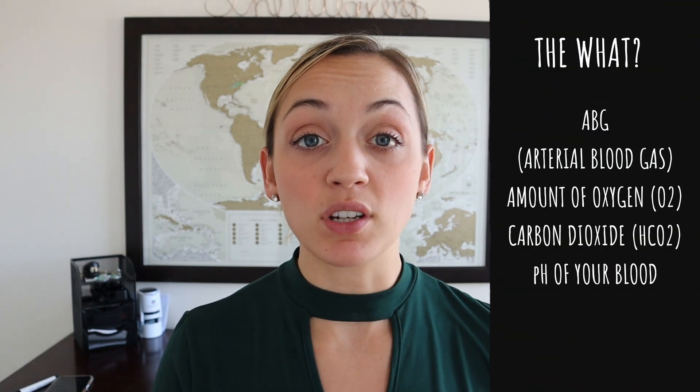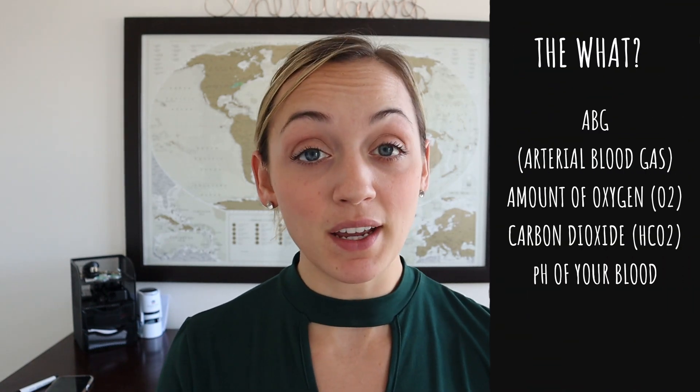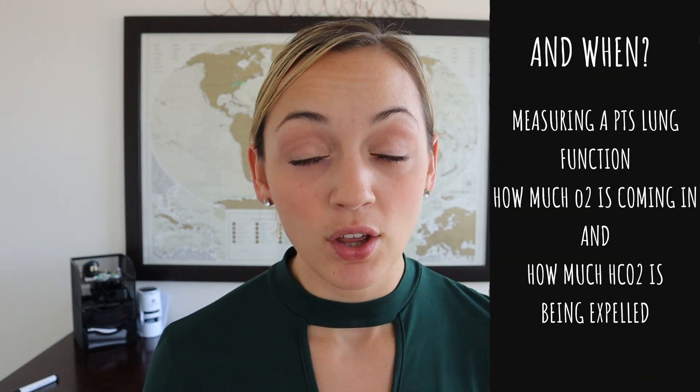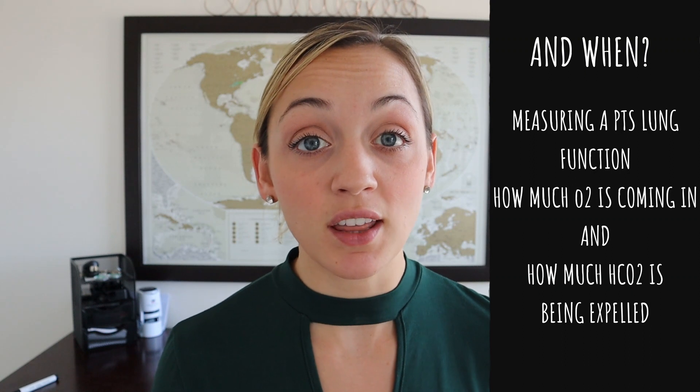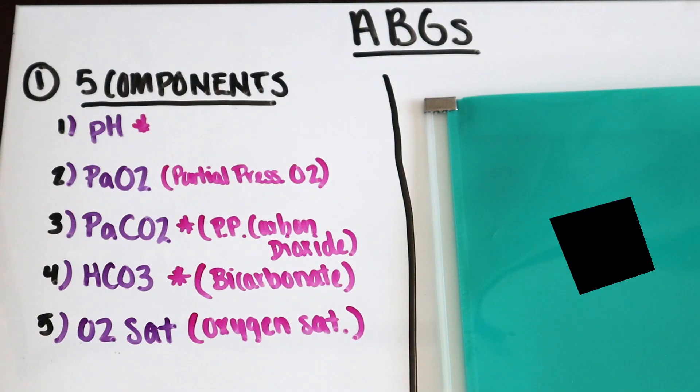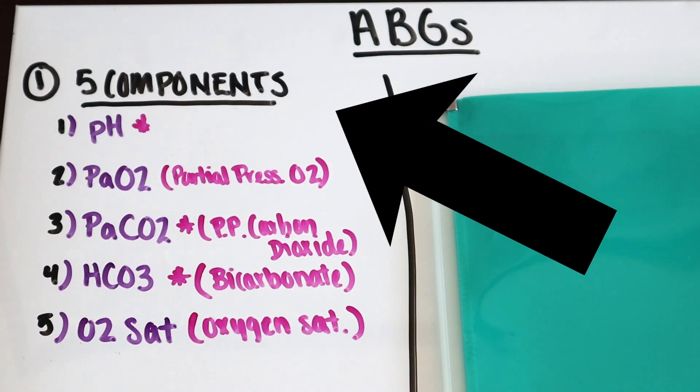So what actually is an ABG? An ABG is looking for the amount of oxygen, carbon dioxide, and the pH of your blood. You would use this to measure the patient's lung function — how much oxygen they are taking in and how much carbon dioxide they are removing from their bodies.